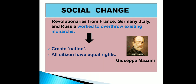In France, Italy, Germany and Russia, they became revolutionaries and worked to overthrow existing monarchs. Nationalists talked of revolutions that would create a nation where all citizens would have equal rights. Italian nationalist Giuseppe Mazzini helped promote this thinking in Italy, where all citizens would have equal rights.